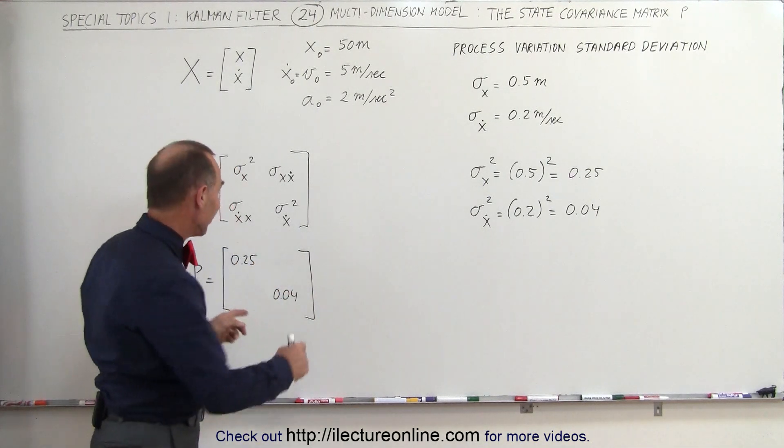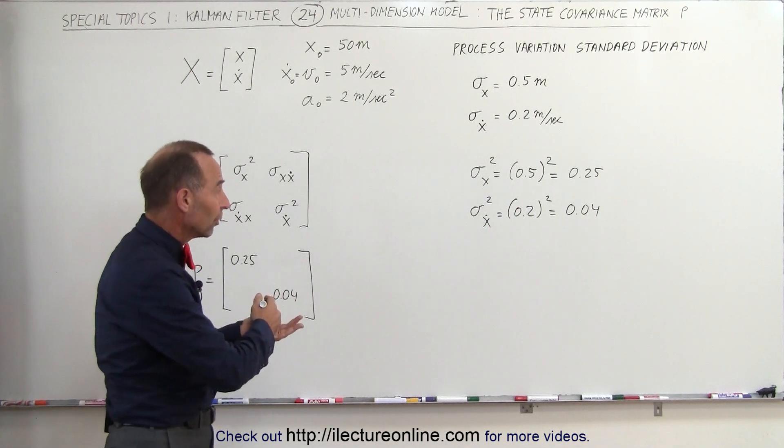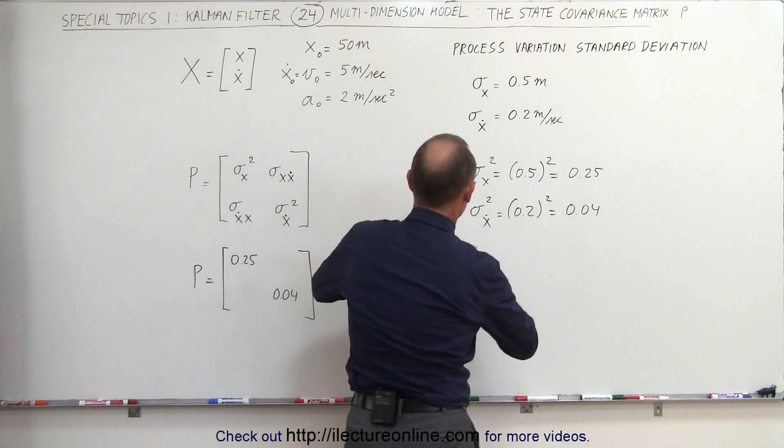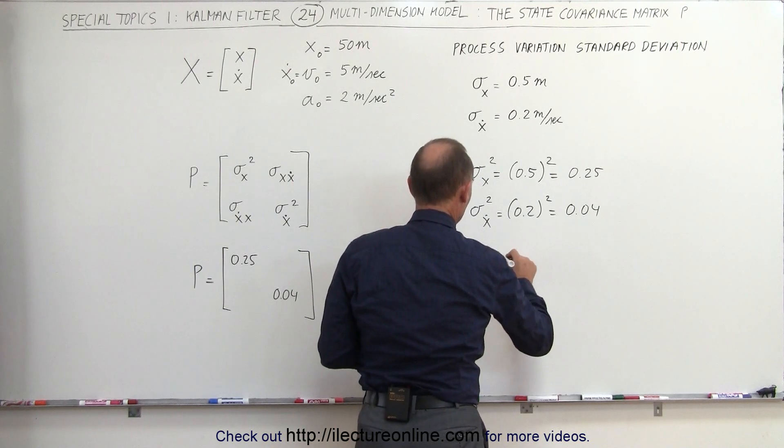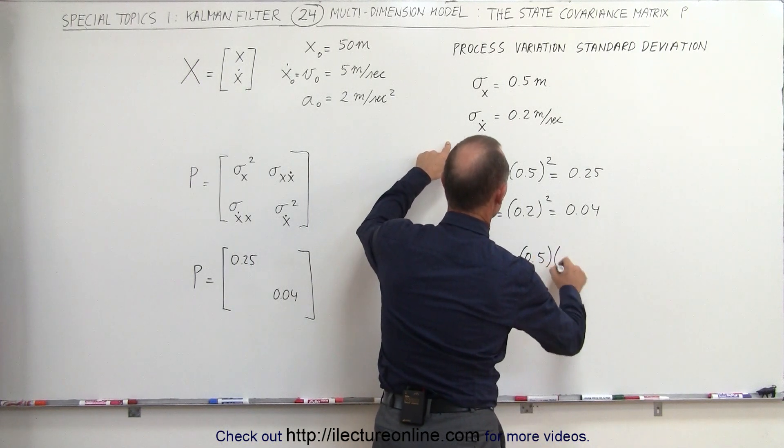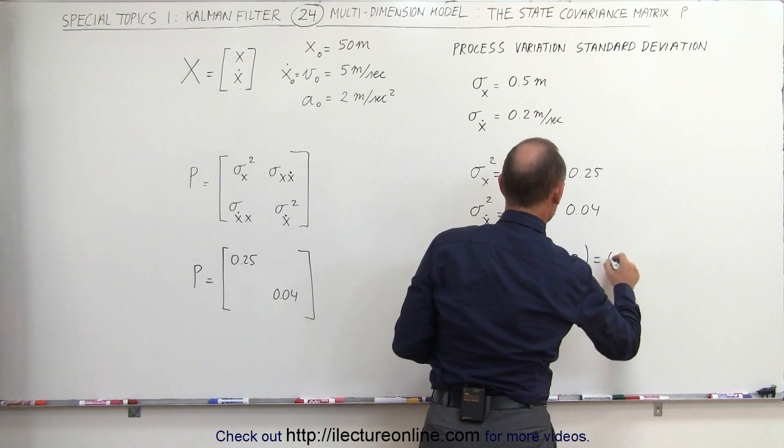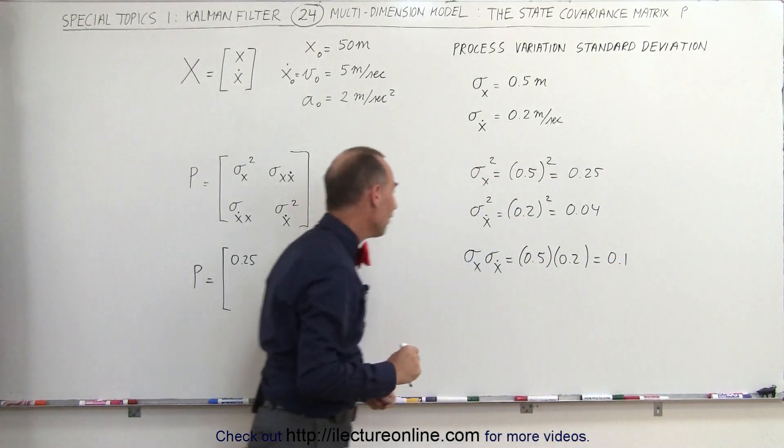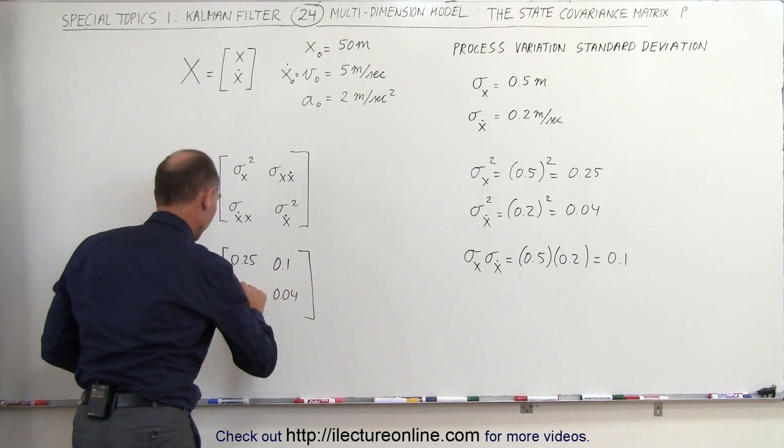Now to find the off diagonal elements, we multiply the standard deviation of position with the standard deviation of velocity. That's equal to 0.5 multiplied times 0.2, which equals 0.1. That is the value that goes into the off diagonal elements, 0.1 and 0.1.